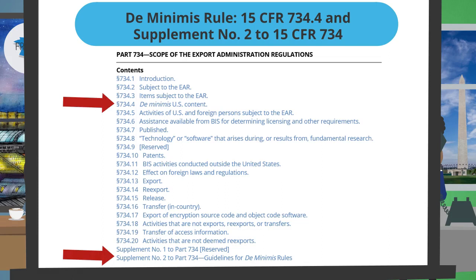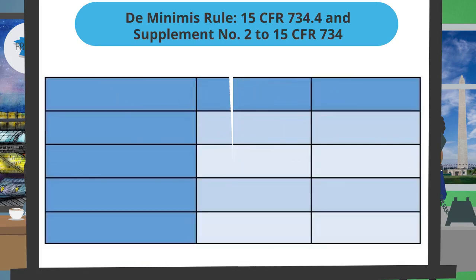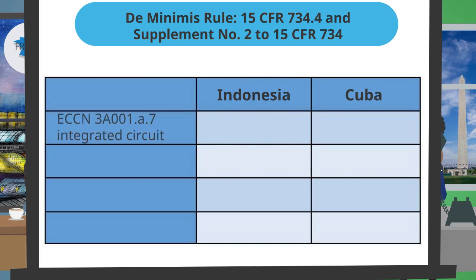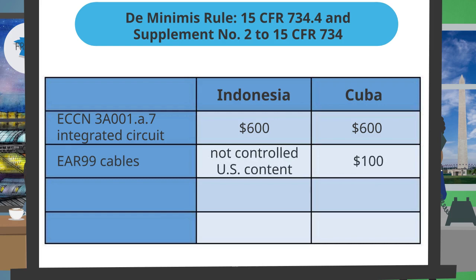A white screen appears with a blue text bubble citing de minimis rule 15 CFR 734.4 and Supplement No. 2 to 15 CFR 734, with red arrows pointing to those sections in the table of contents. The counselor presents an example: the 3A001.8.7 integrated circuit is valued at $600. U.S. origin cables designated as EAR99 will also be incorporated into the hydrophone array with a fair market value of $100. The French-made hydrophone array is valued at $6,000.